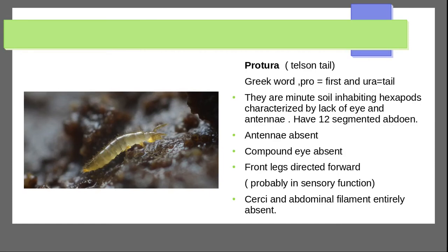Protura are minute soil-inhabiting hexapods characterized by the lack of eyes and antennae. They have a 12-segmented abdomen. The front legs are directed forward, probably serving a sensory function. Cerci and abdominal filaments are entirely absent.